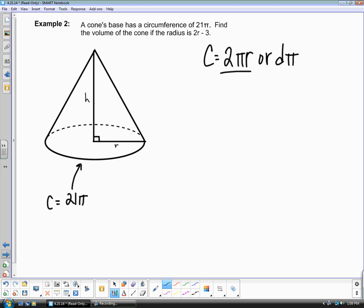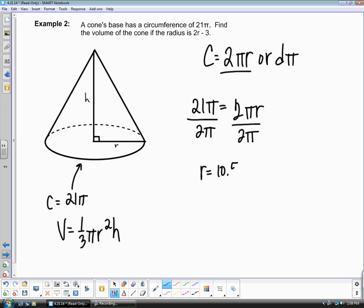I'm going to set my circumference equal to this 2 pi r. So 21 pi equals 2 pi r. The reason I'm doing that is because I want to figure out what the radius is. To find the volume of a cone, we need to know that radius because that is part of our formula. So when we divide by 2 pi, the pi's are going to cancel out and we're left with 21 over 2. The radius is now going to be 10 and a half.